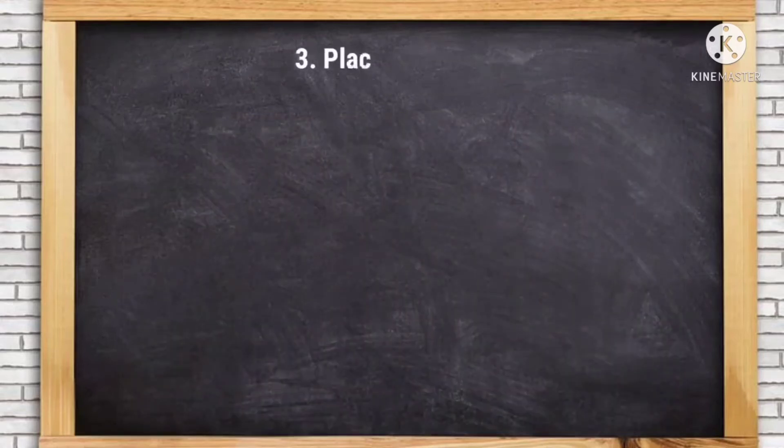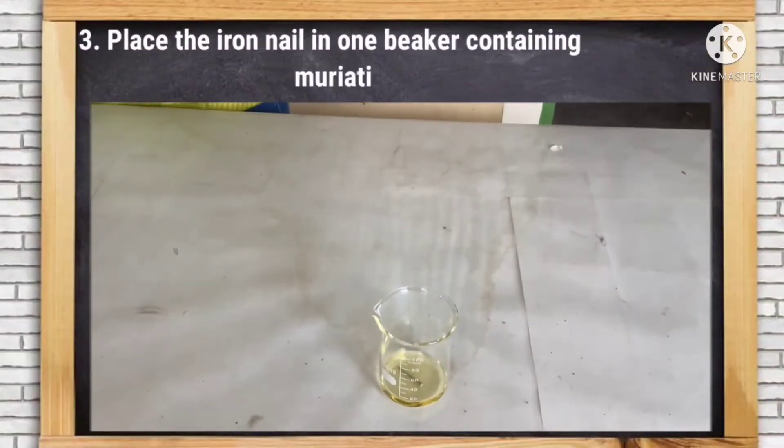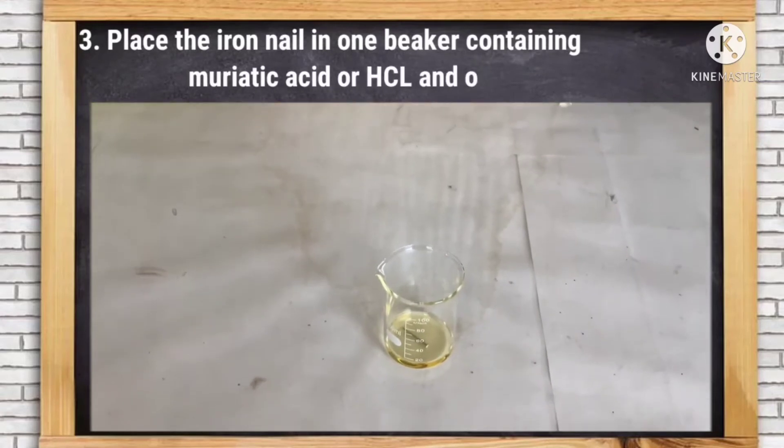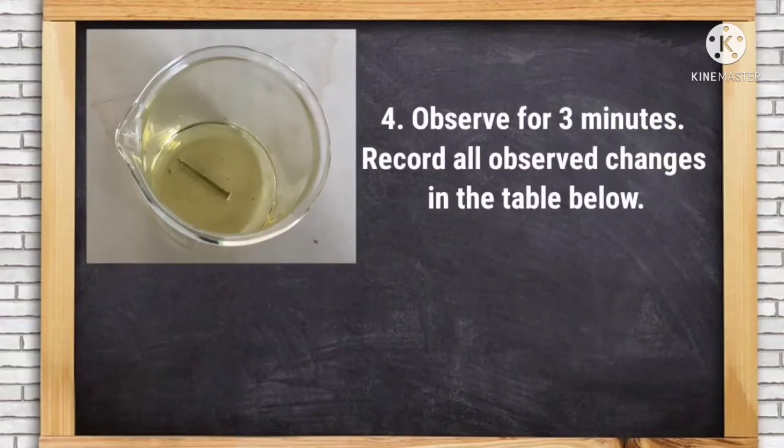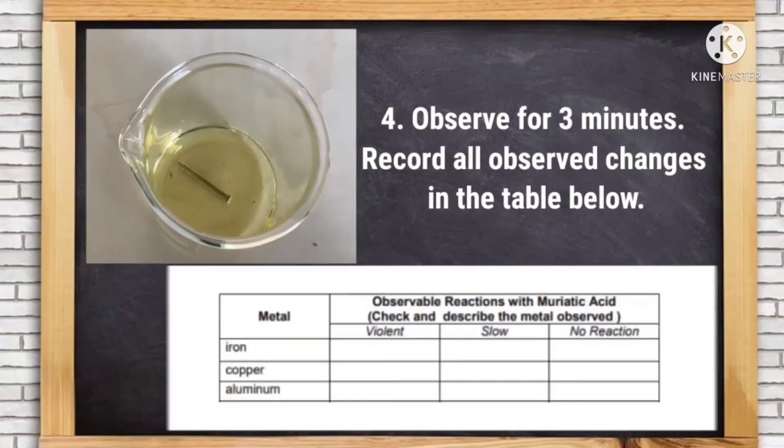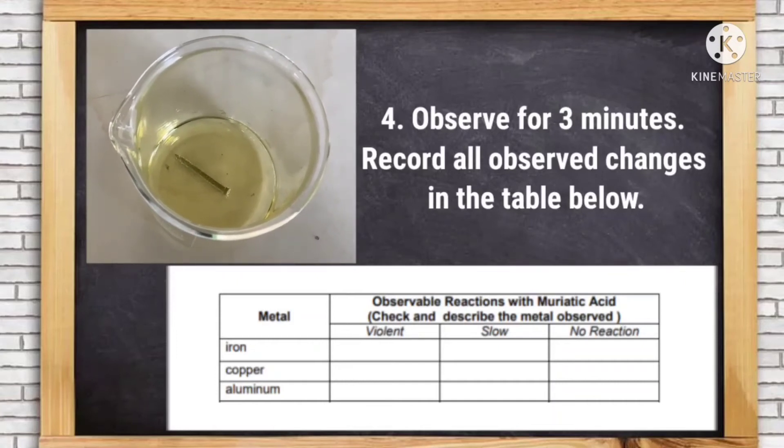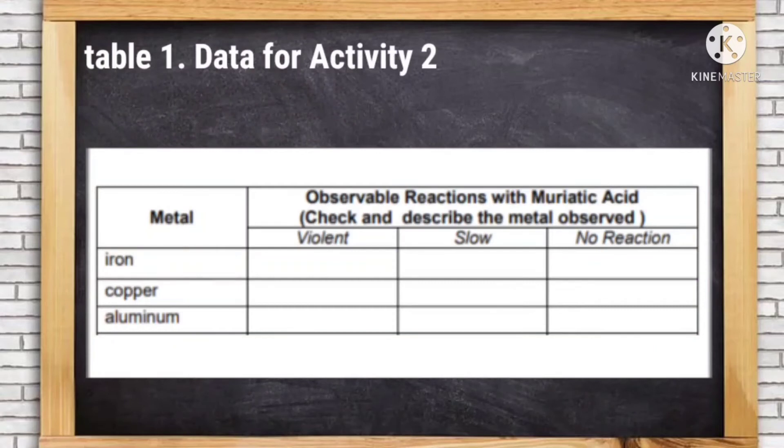Number three, place the iron nail in one beaker containing muriatic acid or hydrochloric acid and observe. Number four, observe for three minutes. Record all observed changes in the table below. Here is table one, data for activity two. Check and describe the metal observed.